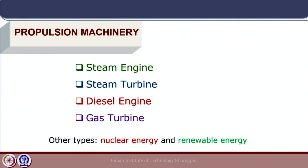Nuclear energy is also used but is restricted to submarines catering to the navies of different nations. Renewable energy is also being explored as an alternative — solar energy, wind energy, and energy harvested from waves are being used, with many device concepts developed to cater to a part of the powering demand for a ship. Solar-powered ferries and boats are in practice, and wind and wave energy concepts provide some powering demand for marine vessels in addition to the main source of power.